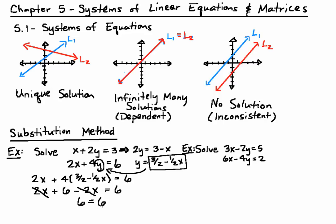Anytime where both variables cancel and we're left with two numbers that are equal to each other, if the numbers are equal, 6 does equal 6, this means that we have infinitely many solutions. And so our answer is infinitely many solutions. It's a dependent system.